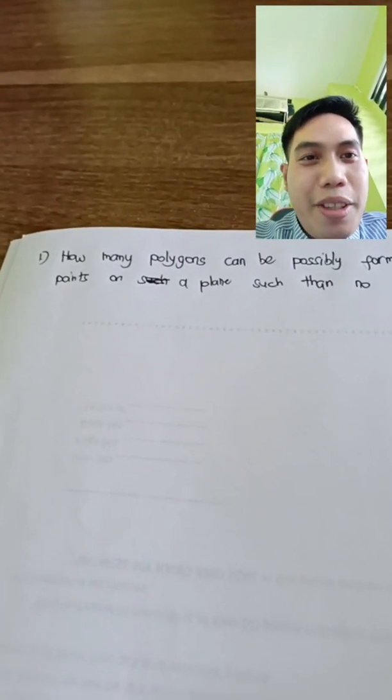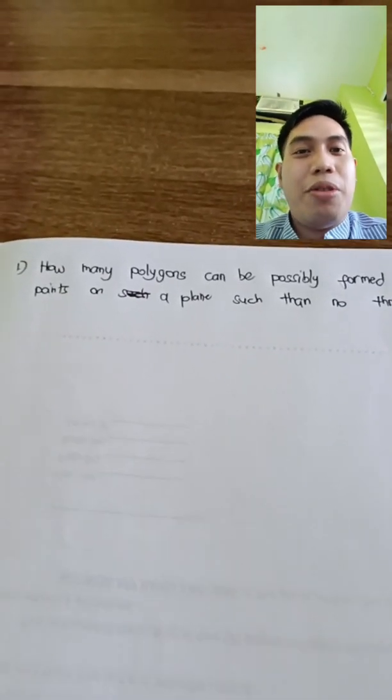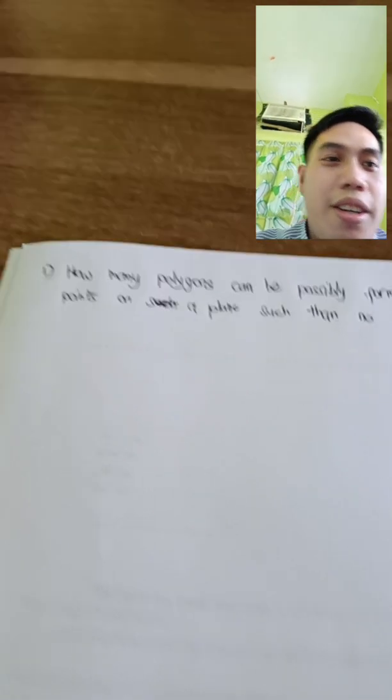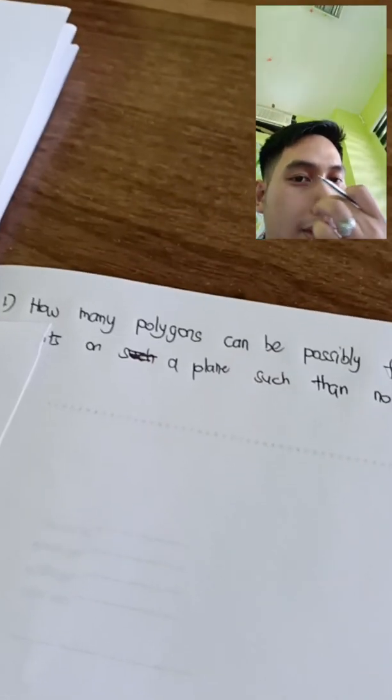I will be using the dual view camera on my phone so you can see what I'm writing. I just wrote the question. So the question is: how many polygons can be possibly formed from five distinct points?